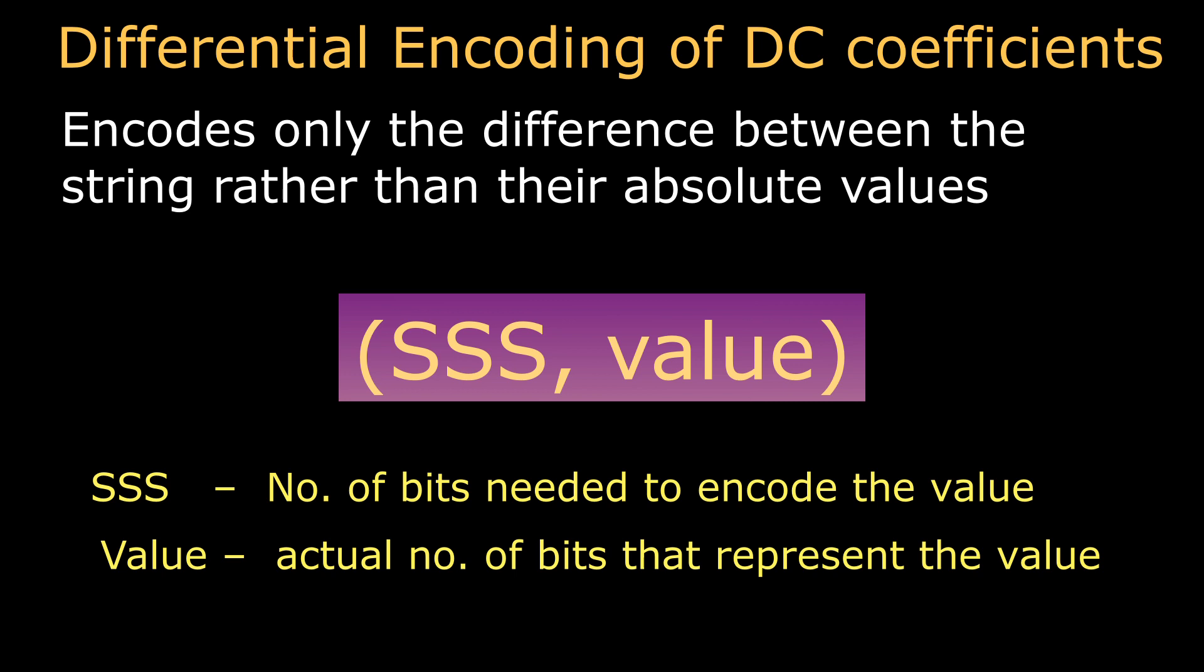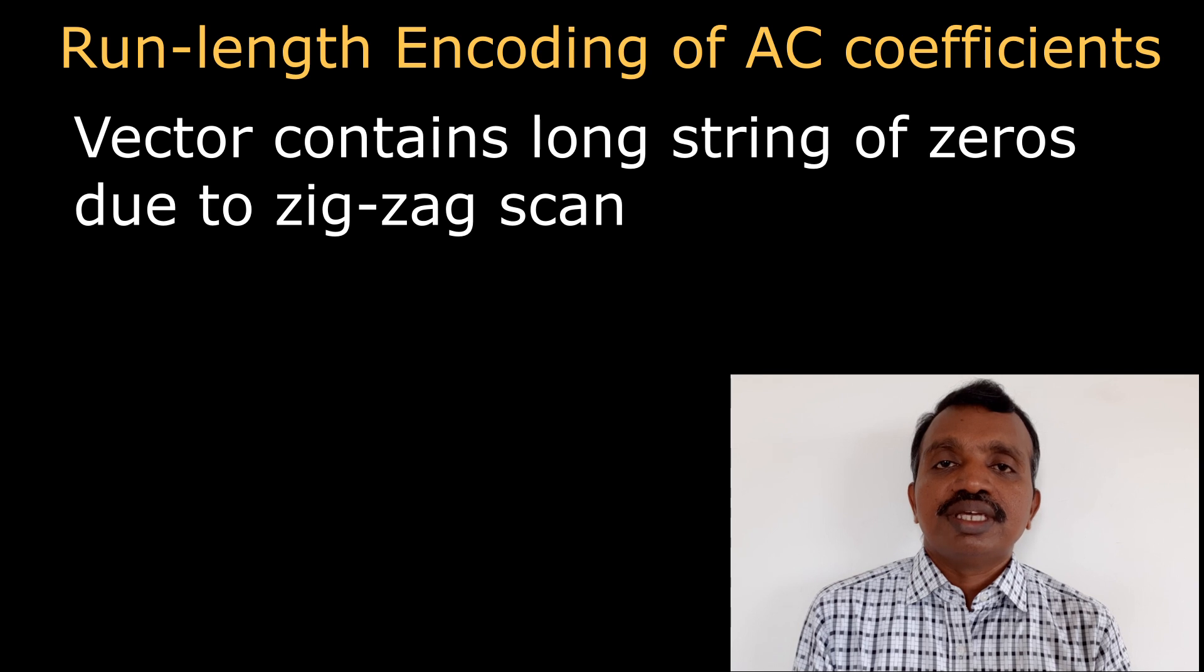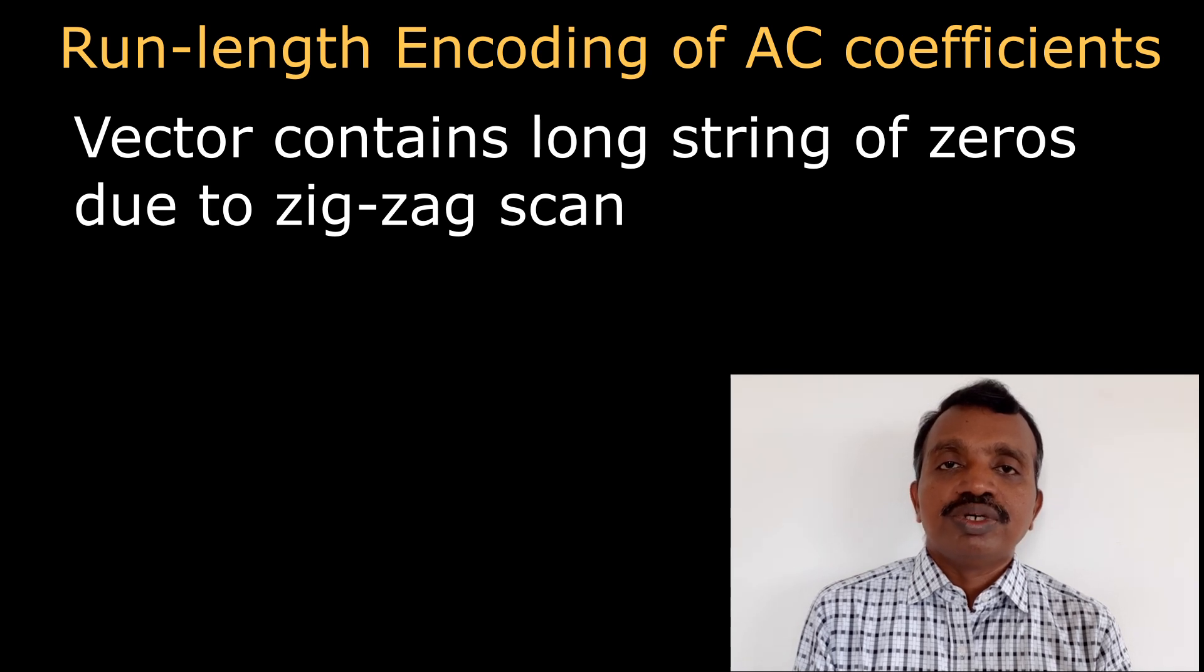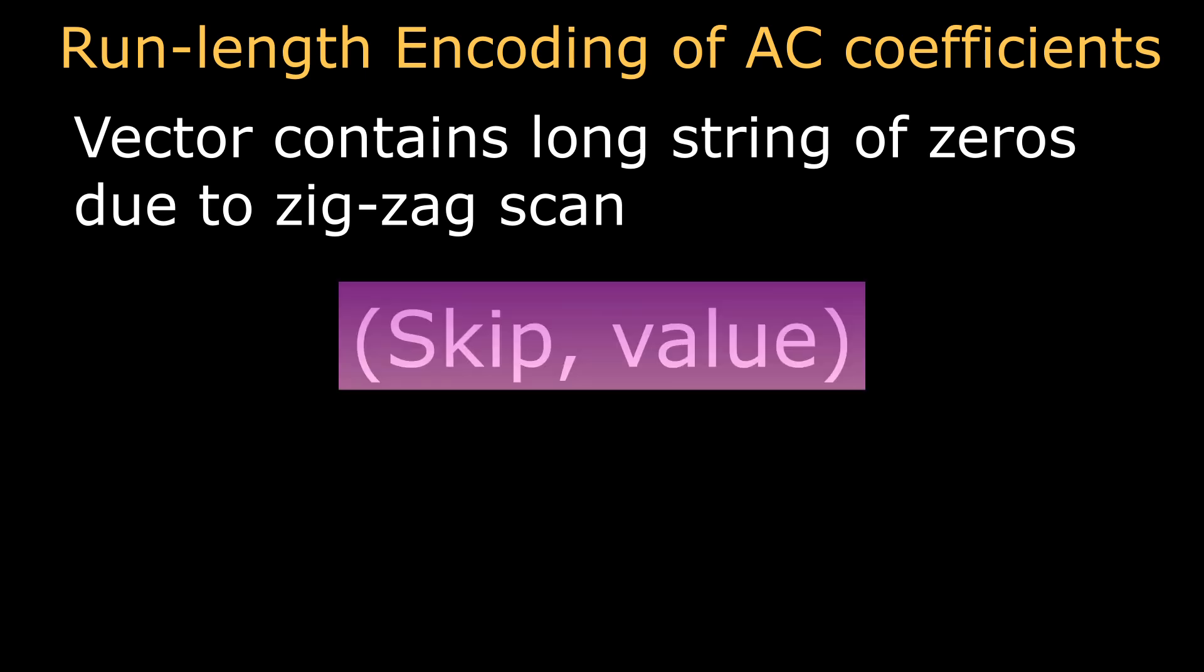The DC coefficient has a long train of zeros, hence the AC coefficients are encoded by using run-length coding. The AC coefficients are encoded in the format skip,value, where skip represents the number of zeros in the run.